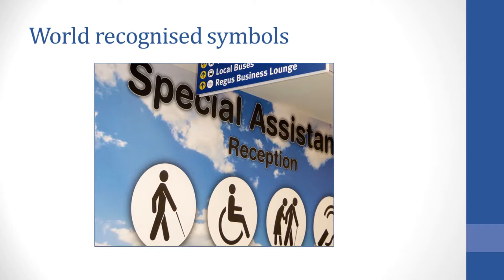These are some good examples on screen: the blind person represented by a person carrying a cane, a disabled user, the elderly, and somebody with audio and ear problems — all represented in the image — as well as special assistance at the reception. These are great examples of universal design.